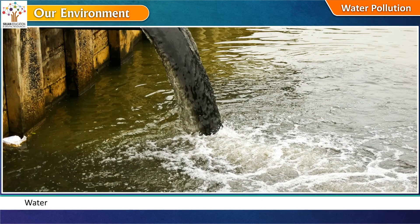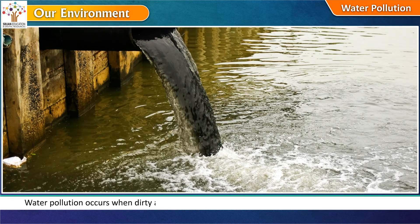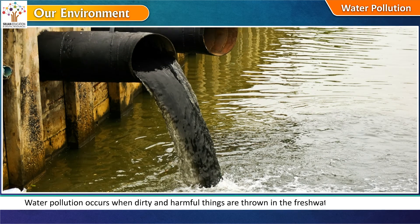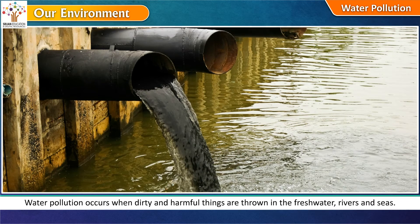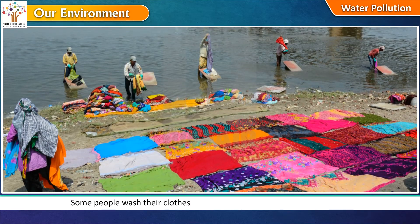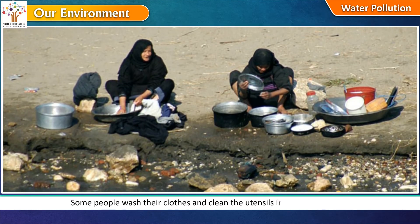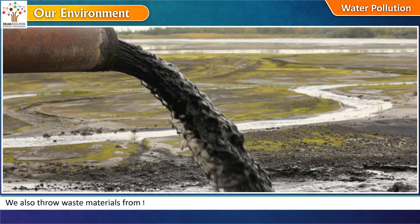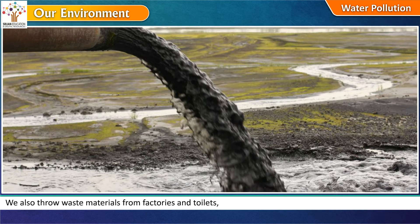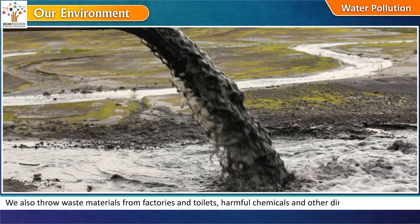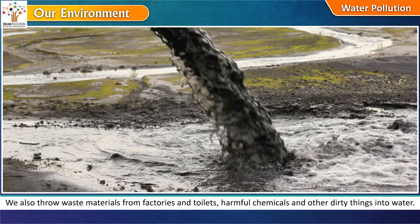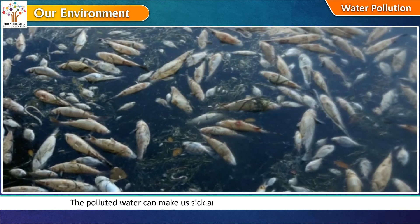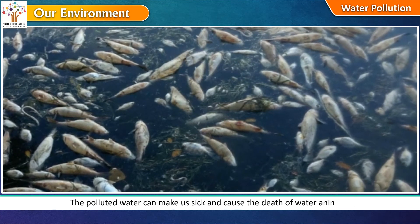Water pollution occurs when dirty and harmful things are thrown in fresh water, rivers, and seas. Some people wash their clothes and clean utensils in ponds and rivers. We also throw waste materials from factories and toilets, harmful chemicals, and other dirty things into water. The polluted water can make us sick and cause the death of water animals.